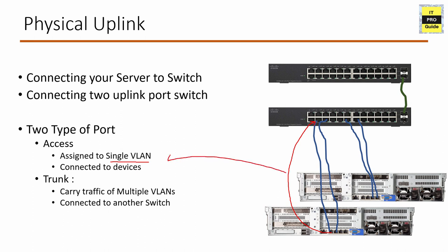A trunk port is a port that can be assigned to multiple VLANs and is capable of carrying traffic from multiple VLANs. When you configure a switch port as a trunk, it accepts frames from multiple VLANs. Usually, uplink ports between two switches are connected as trunk so that they can carry multiple VLANs traffic.